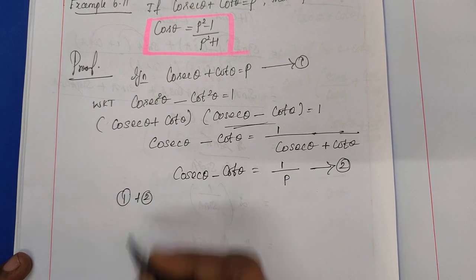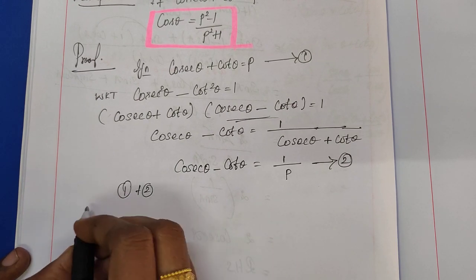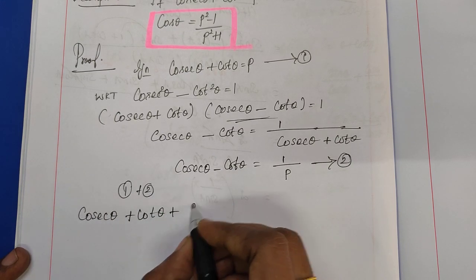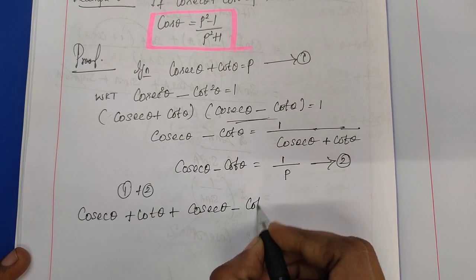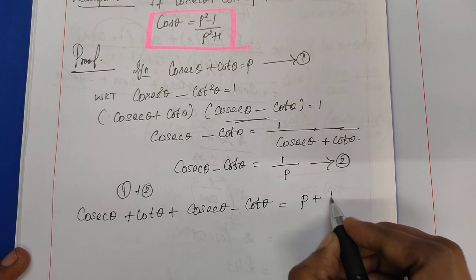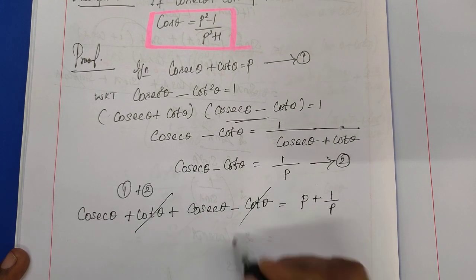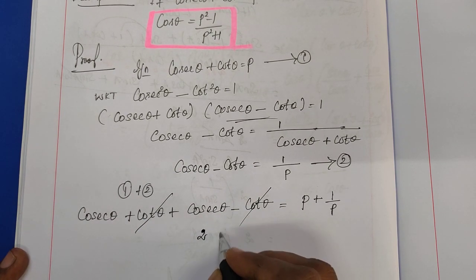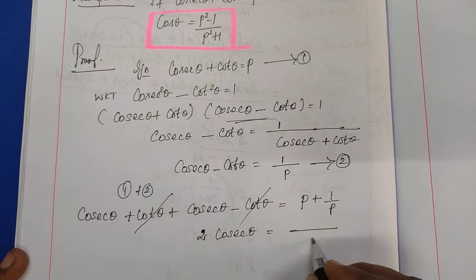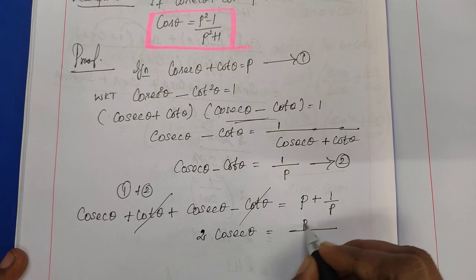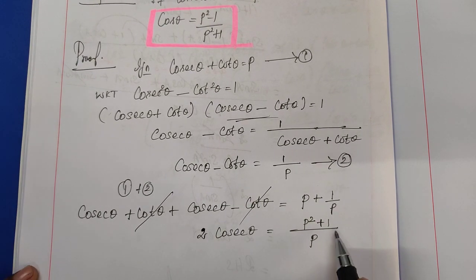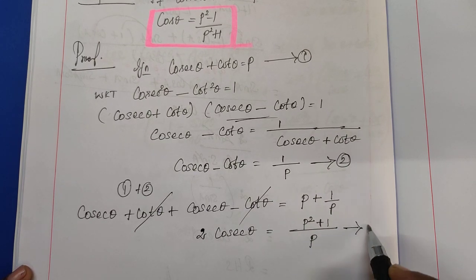Adding equations 1 and 2: on the left-hand side, cosecant theta plus cot theta plus cosecant theta minus cot theta. The plus cot theta and minus cot theta cancel. The right-hand side is p plus 1 by p. The result is 2 cosecant theta equals p squared plus 1 by p. This is equation number 3.